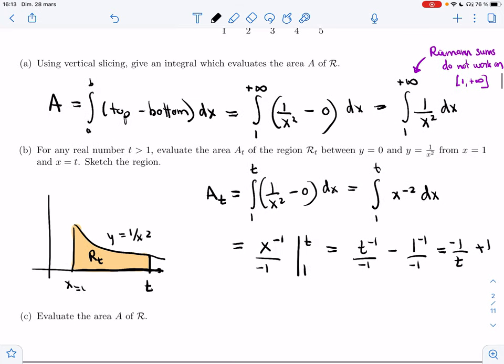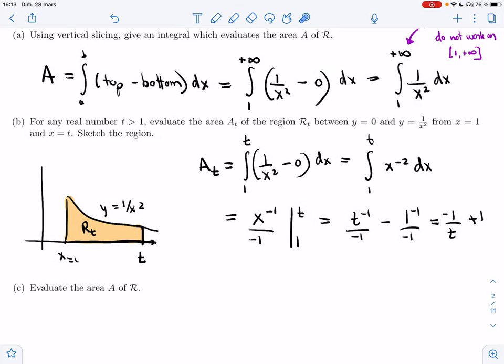There's a minus here. So if I stop at 10, I'll get 1 minus 1/10, I'll get 9/10. If I stop at 100, I'll get 99 over 100. And so you can compute the area at every single possible finite stopping point.